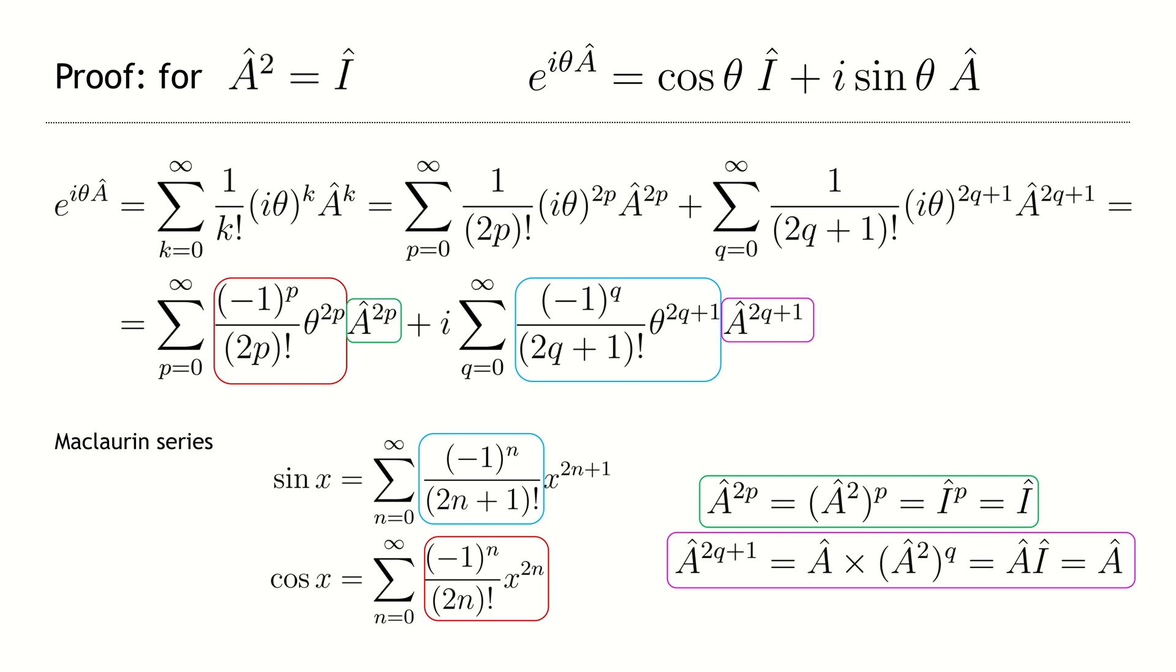Finally, we are left with something to do with the operator A in the even and odd powers. Let's use the property that A is a self-inverse operator and consider these two cases. In the first case, it is just a unit matrix and in the other, it is operator A itself.